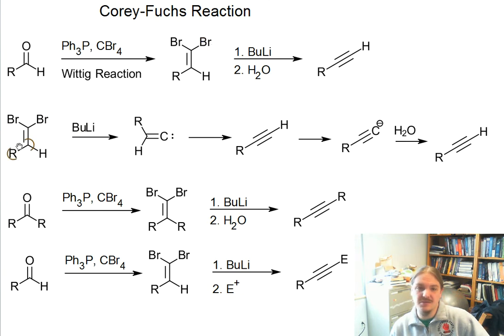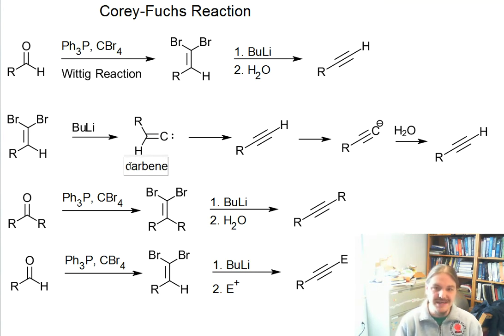The second reaction: butyllithium will react with these 1,2-dibromoalkenes to do something called alpha elimination. So it removes both bromine atoms and leaves behind this strange looking intermediate called a carbene.